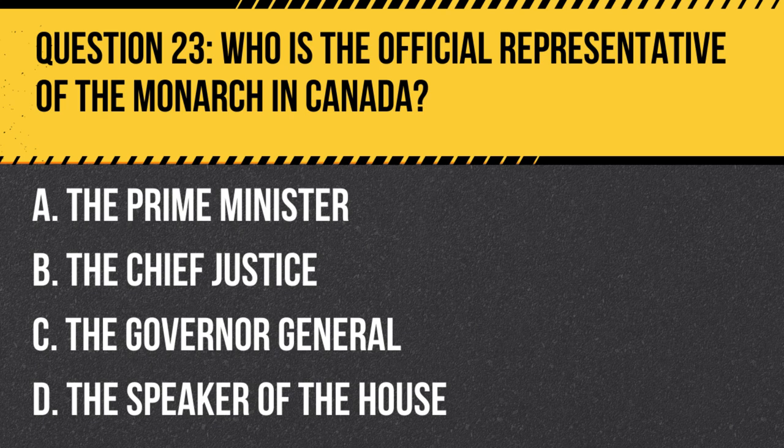Answer: C. The Governor-General. The Governor-General acts as the representative of the monarch in Canada and carries out royal duties as needed.